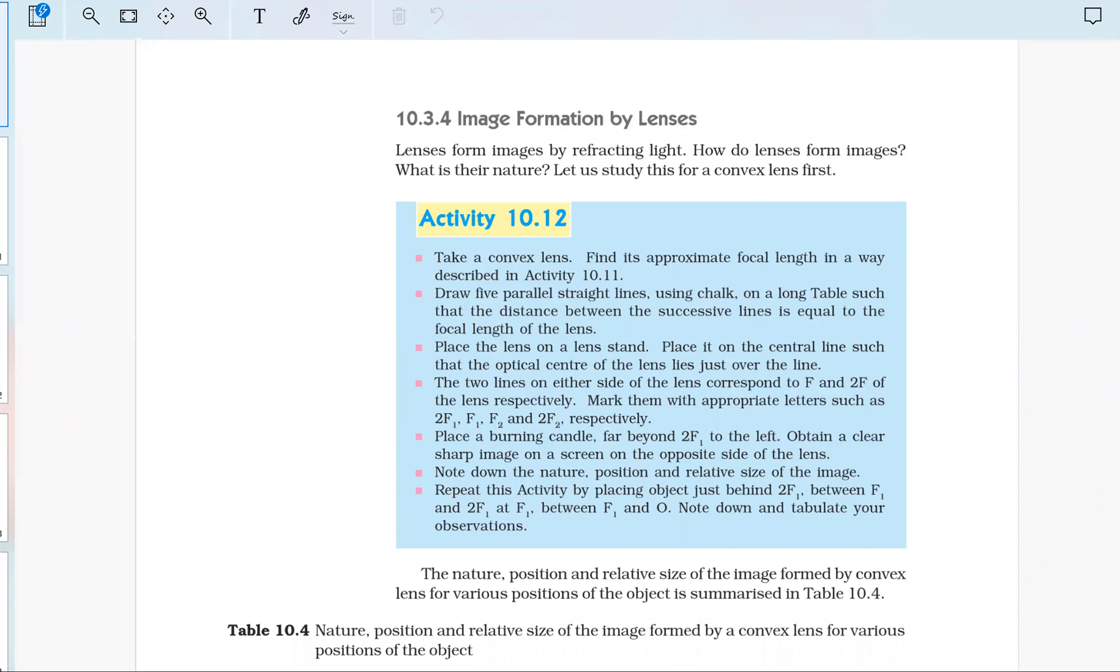Activity 10.12: Take a convex lens and find its approximate focal length in the way described in Activity 10.11. Draw five parallel straight lines using chalk on a long table such that the distance between successive lines is equal to the focal length of the lens.